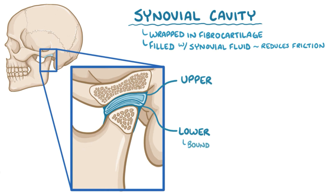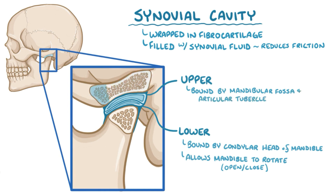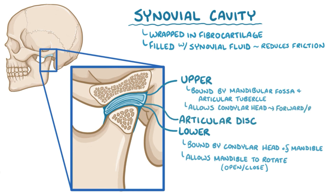The lower compartment is bound inferiorly by the condylar head of the mandible, and allows the mandible to rotate, which lets the mouth open and close. The upper compartment is bound superiorly by two regions of the temporal bone — the mandibular fossa in the middle and back, and the articular tubercle in the front. Separating these two compartments is the articular disc, and the upper compartment allows the condylar head to move forward and rotate.